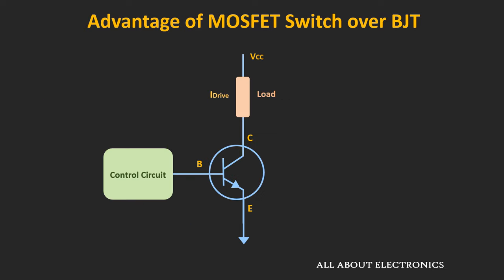At low drive currents, the required base current for driving the BJT into saturation will be lower. So for low driving current applications like driving LEDs, the BJT is a very cost-effective solution. But when the drive current is in amperes, the required base current to drive the BJT into saturation will also increase. And in that case, if we want to control the BJT as a switch using a microcontroller or any logic circuit, it is not possible for very large currents.